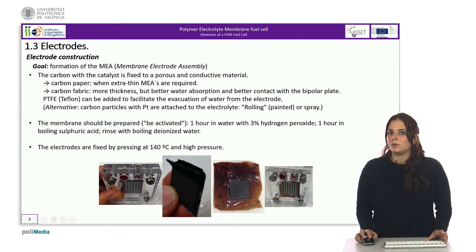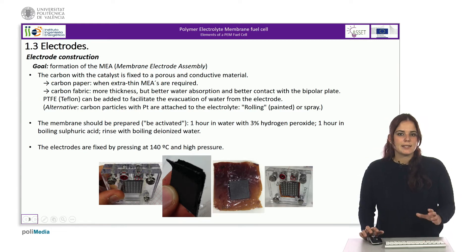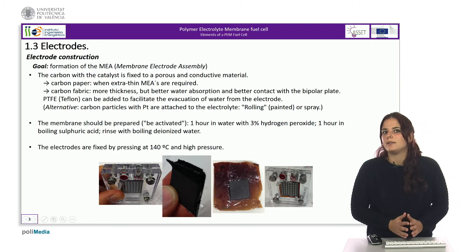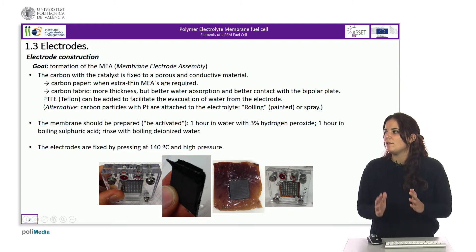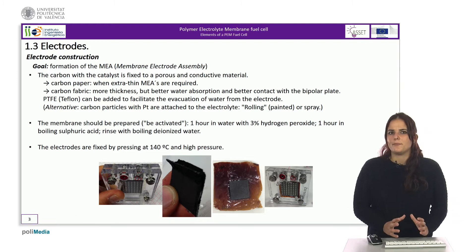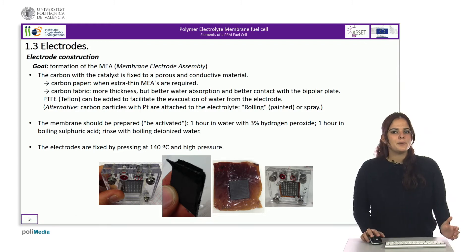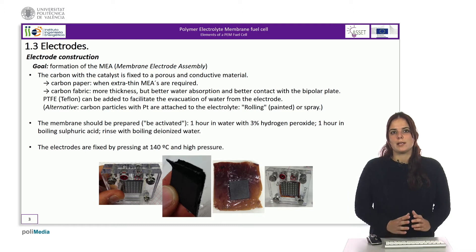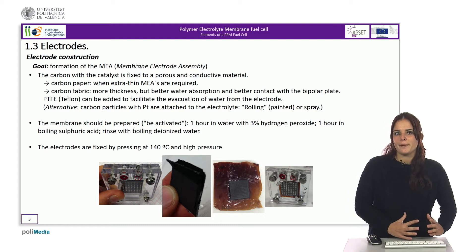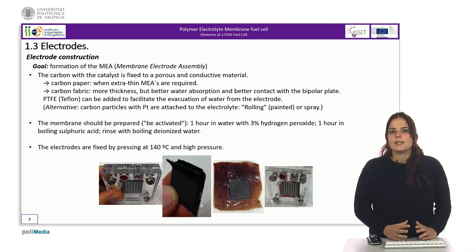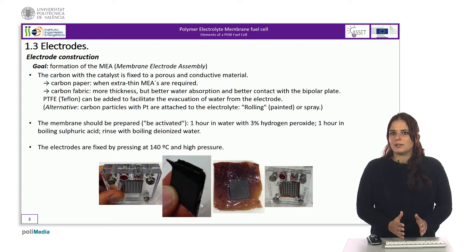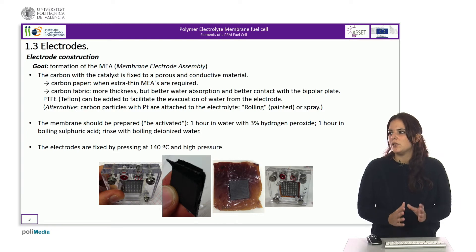Both the electrodes and the membrane are arranged in such a way that they form a perfect assembly. As already mentioned, this assembly is called the Membrane Electrode Assembly, or MEA, and it is assembled with compression at a temperature of 140 degrees Celsius.